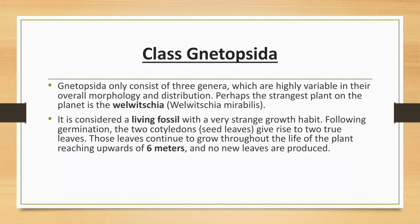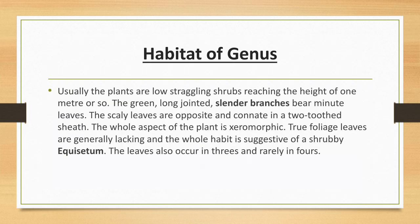Class Gnetopsida consists of three genera which are highly variable in their overall morphology and distribution. Perhaps the strangest plant on the planet is Welwitschia, considered a living fossil with a very strange growth habit. Following germination, the two cotyledons give rise to true leaves; those leaves continue to grow throughout the life of the plant, reaching upward of six meters, and no new leaves are produced.